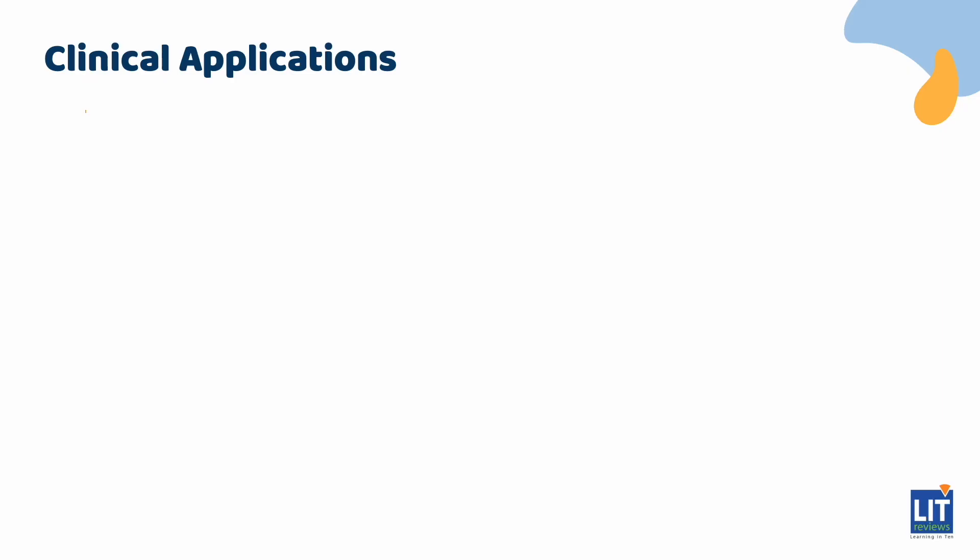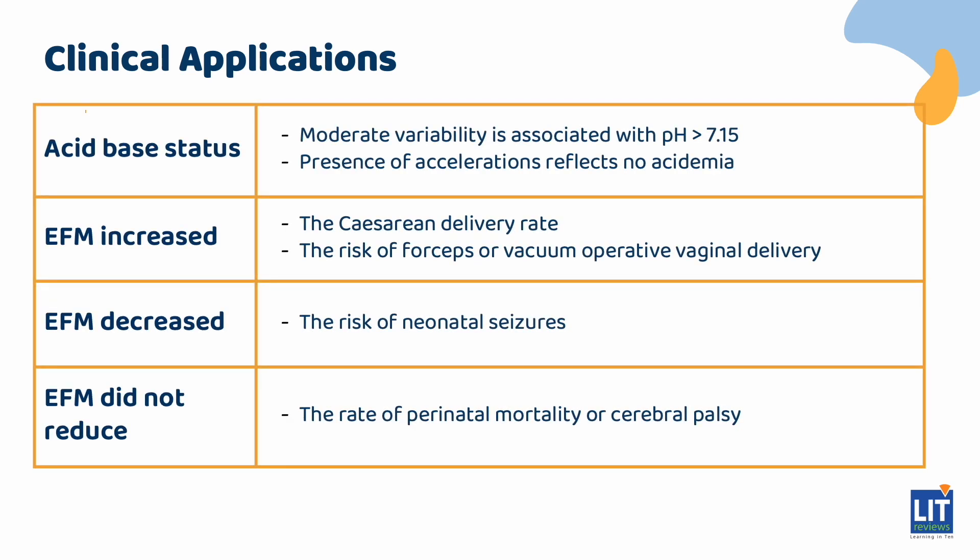Regarding the clinical applications of electronic fetal heart rate monitoring: moderate variability is associated with a pH greater than 7.15, and the presence of accelerations reflects no fetal acidemia. Electronic fetal monitoring increased the cesarean delivery rate — with the indication being abnormal fetal heart rate tracings and concern for acidemia — and also increased the risk of forceps or vacuum operative delivery. However, it decreased the risk of neonatal seizures, though it did not reduce the rate of perinatal mortality or cerebral palsy. The false positive rate for predicting cerebral palsy is 99%. Notably, 60% of women in preterm labor will have non-reassuring fetal heart rate patterns. The ideal method to assess fetal status has not been determined, but applying accepted fetal heart rate interpretation standards allows opportunity for timely intervention and to optimize fetal outcomes.